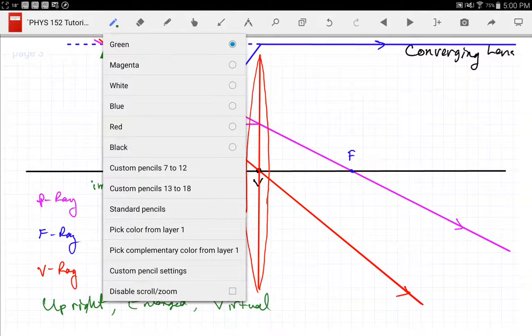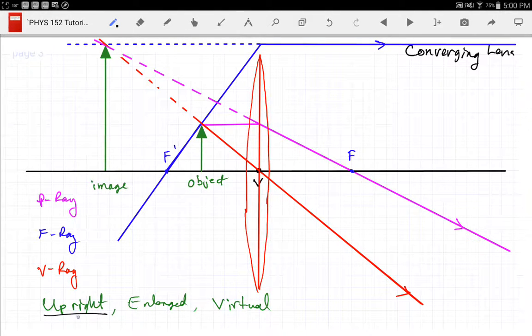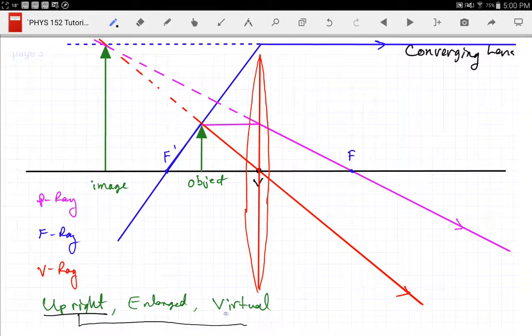And once again, like I told you before, the virtual and upright go together. So if I have an object closer than the secondary focal point to a converging lens, I'm going to have an enlarged virtual upright image.